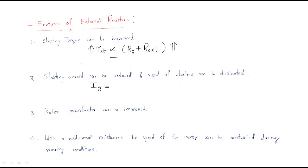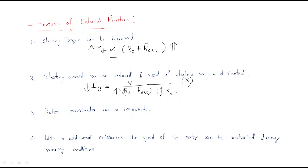Second, the starting current can be reduced, and the need for starters can be eliminated. The rotor starting current formula is V divided by (R2 plus external resistance plus jX2). By adding external resistance, the denominator increases, so the starting current of the rotor is decreased. Whenever the rotor current decreases, there is no requirement for a starter. The intention of a starter is to reduce starting current to protect the winding.